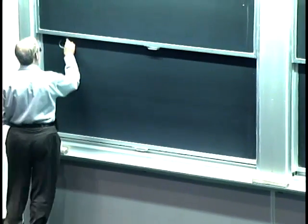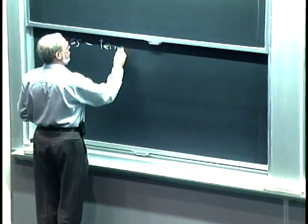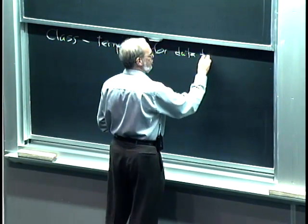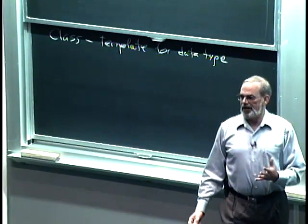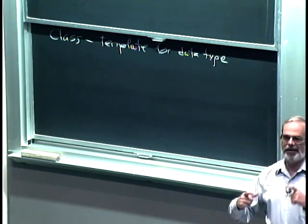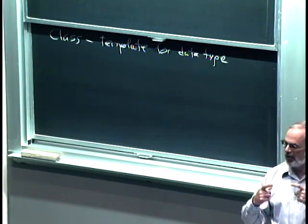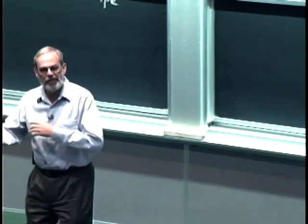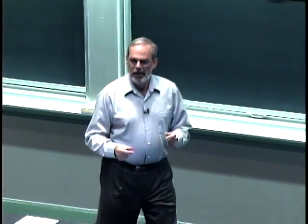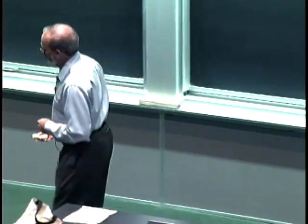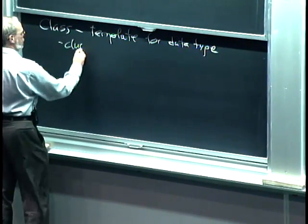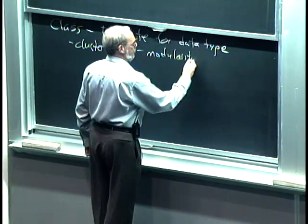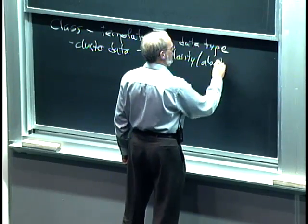A class was basically a template for an abstract data type. This was really to drive home the idea of modularity — I want the ability to say I've got a set of things that naturally belong together, I'm going to cluster them together, and I want to treat it like it's a primitive, like a float, int, or string. It's just going to be a point, or a segment. It's a way of clustering data together — a notion of modularity and abstraction where I'm treating them as primitives.